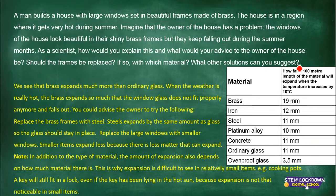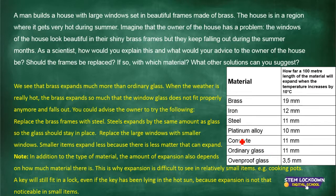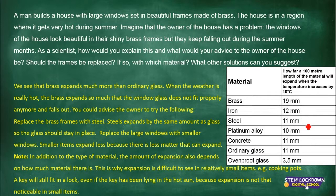Looking at our table again, we have brass, iron, steel, platinum alloy, concrete, ordinary glass, and ovenproof glass. We want a material that prevents the glass from falling off, so we look for a material with the same expansion rate as glass. We can't use concrete with glass, so we look at metals. Steel is 11 mm and ordinary glass is 11 mm — steel is the answer.